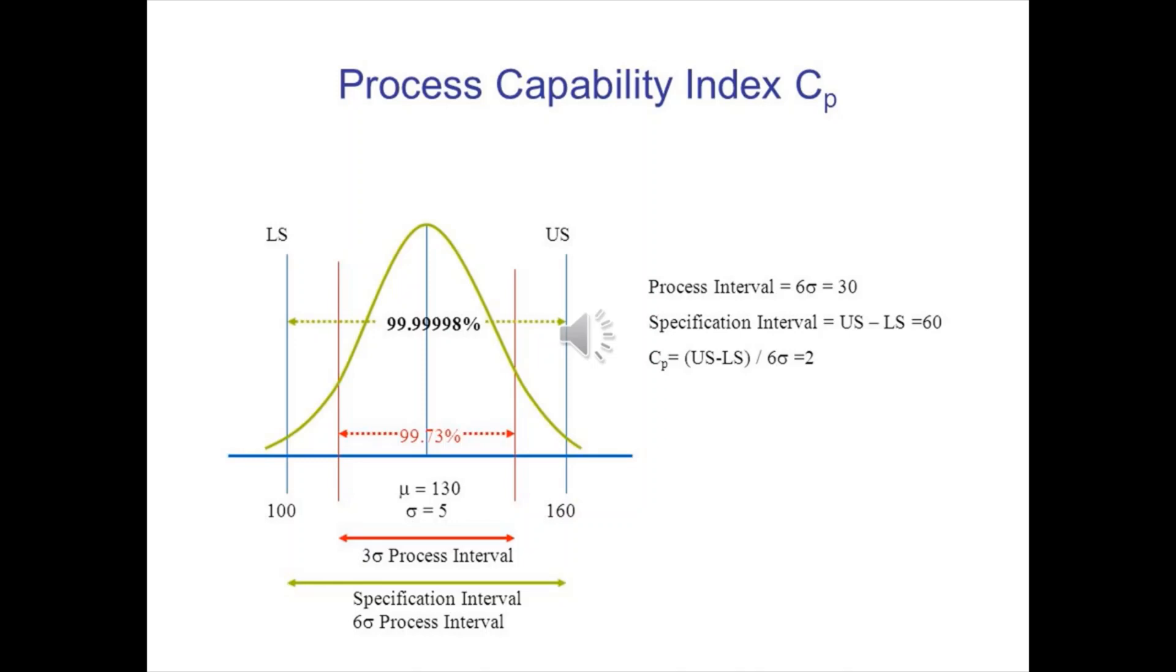Now, one of the ways we're going to measure how good our process is compared to the specification. We do that with the process capability index CP. And what you do is you take the standard deviation of the process. And this is after you've eliminated all the outliers and non-random variation. You calculate 6 sigma. In this case, my standard deviation is 5. So 6 times 5 is 30. My specification interval is the upper spec minus the lower spec, 160 minus 100, or 60. And CP is just basically upper spec minus lower spec, which is 60, divided by my 6 sigma. And that gives me 2. So this would have a CP of 2.00.